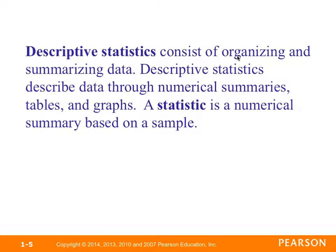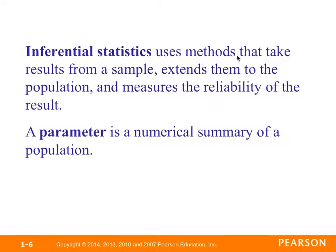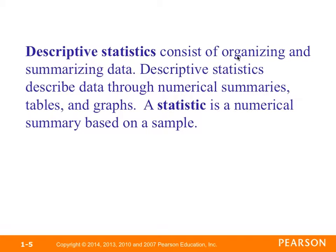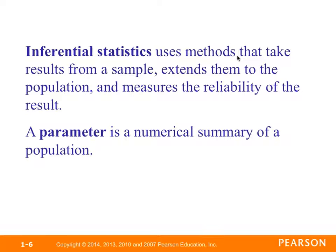Descriptive statistics consists of organizing and summarizing data through numerical summaries, tables, and graphs. A statistic is a numerical summary based on a sample. Inferential statistics uses methods that take results from a sample and extends them back to the population and measures the reliability of the result. A parameter is a numerical summary of a population. This should be easy to remember because parameter and population both start with P, and statistic and sample both start with S.